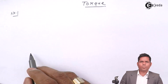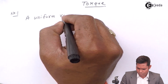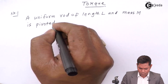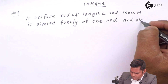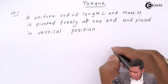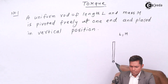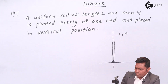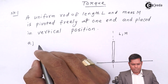Let me write the question for you. There is a uniform rod of length L and mass M, pivoted at one end and kept vertical. Now you have to find the angular acceleration of the rod when it is at an angle theta.